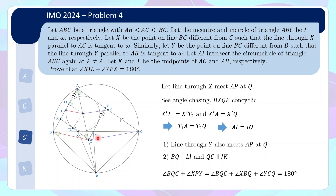We are basically done. Let's look at angle BQC plus angle YPX. We can break up angle YPX into two parts. The angle QPX, by the concyclicity of those four points, equals angle XBQ. Similarly, angle QPY equals angle QCY. So what we need is angle BQC plus angle QBX plus angle QCY equals 180 degrees. And of course it's 180 degrees because these are the angles of a triangle.